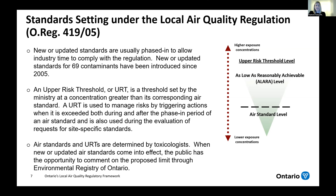Since Regulation 419 came into place, approximately 69 new or updated air standards have been introduced. These numbers are determined by toxicologists who work for the Ministry. Because air standards are phased in and there are different ways a facility can show compliance, the regulation also includes numbers called upper risk thresholds, or URTs. URTs correspond to an air standard but are set at a higher value. The region between the air standard level and the URT level is referred to by the Ministry as the ALARA — as low as reasonably achievable — region.